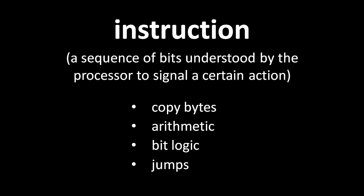Every CPU needs instructions for a few essential tasks. First, every CPU needs one or more instructions for copying bytes from one location to another, mainly from one part of memory to some other. Second, every CPU needs instructions for doing basic arithmetic — at the very least addition and negation.